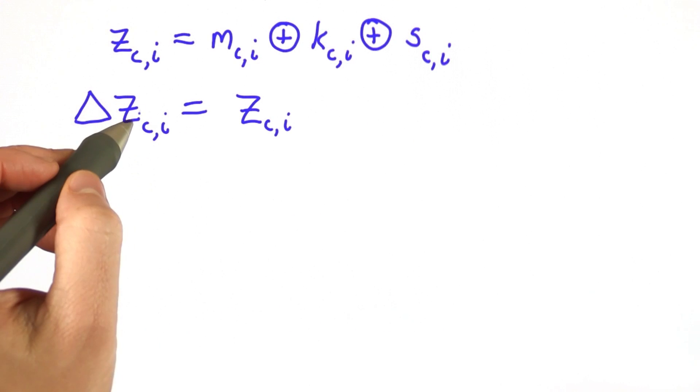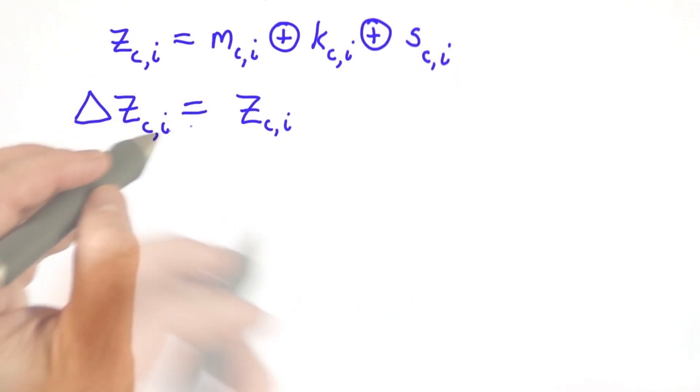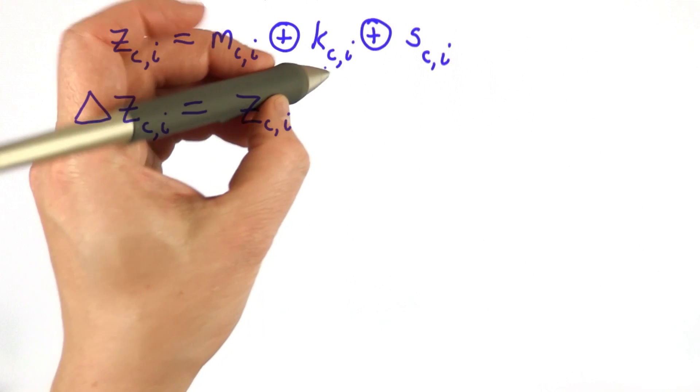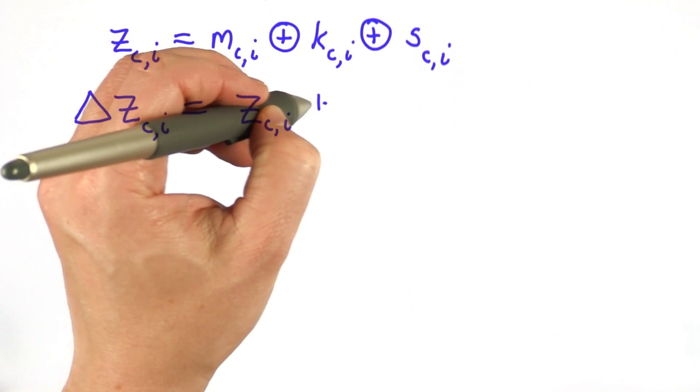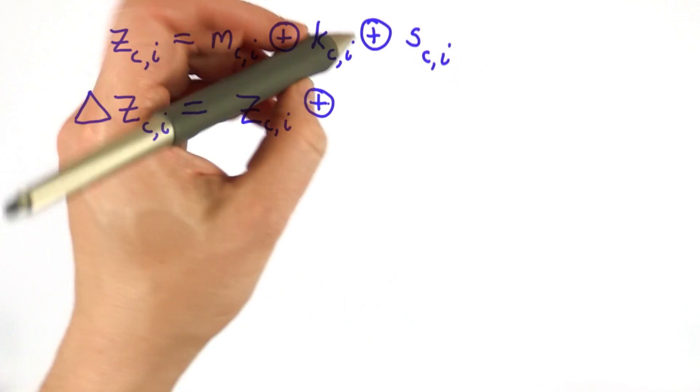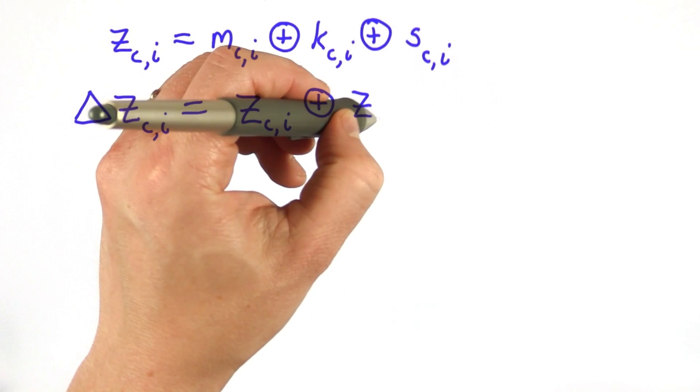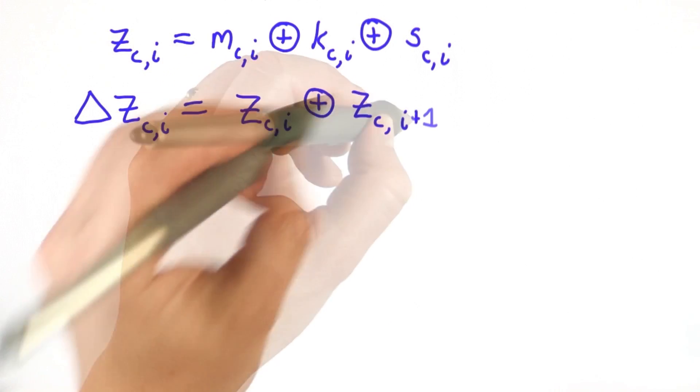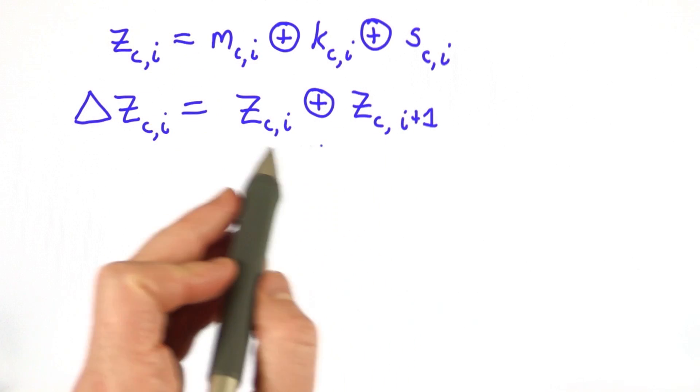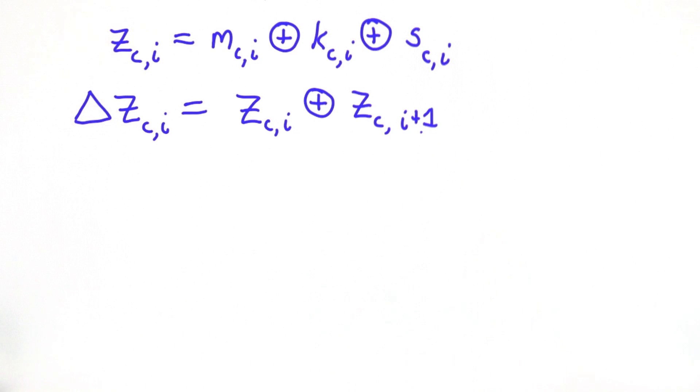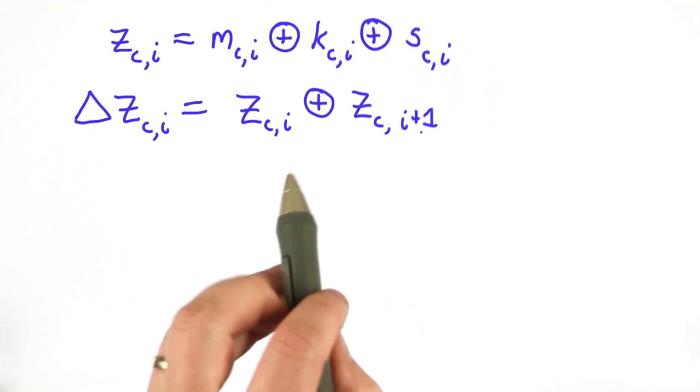We're going to define delta z sub ci as the difference between two subsequent characters in the ciphertext for that channel. That's XORed with zc of i plus 1. Because this is for that channel, these are five characters apart in the intercepted ciphertext, but they're adjacent for that channel.